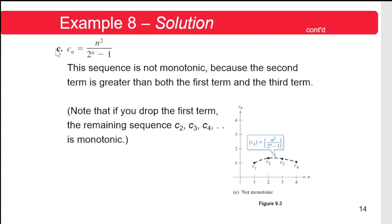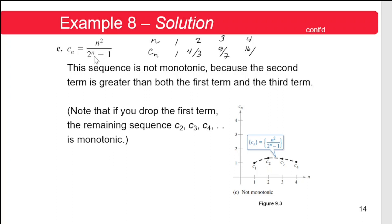For another example, suppose the n-th term is c_n = n²/(2^n − 1). If n = 1, c₁ = 1²/(2¹ − 1) = 1/1 = 1. If n = 2, c₂ = 4/(4 − 1) = 4/3. If n = 3, c₃ = 9/(8 − 1) = 9/7. If n = 4, c₄ = 16/(16 − 1) = 16/15.